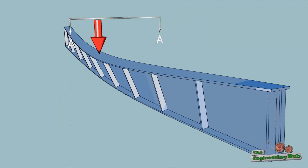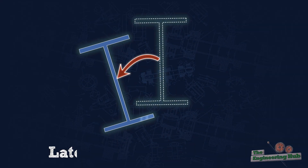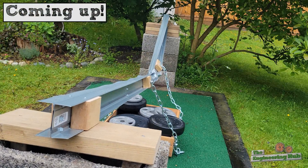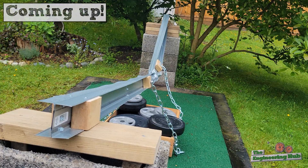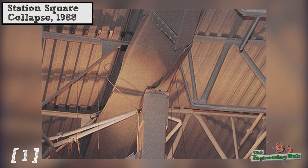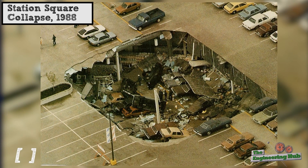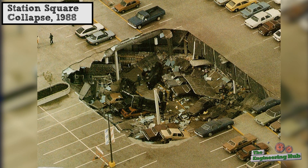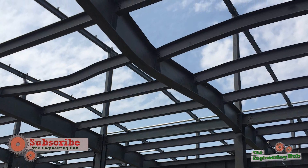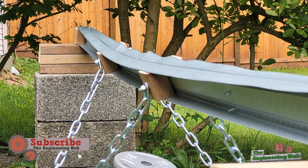This phenomenon of sideways deflection and twisting is known as lateral torsional buckling, and can be extremely destructive to beams. Lateral torsional buckling was the cause of the Station Square collapse in 1988, but we will save that investigation for another time. For now, let's break down why this type of buckling occurs and why it is so fatal for beams.